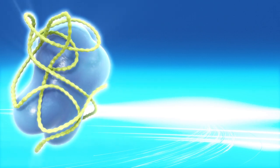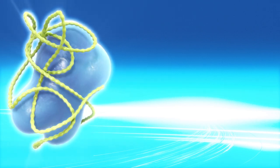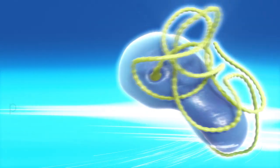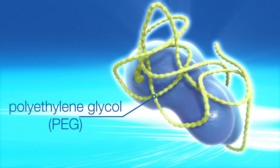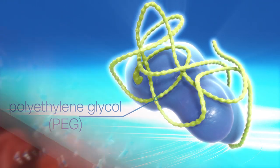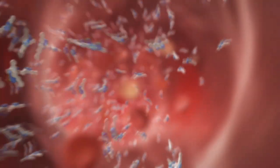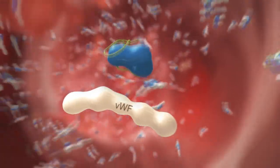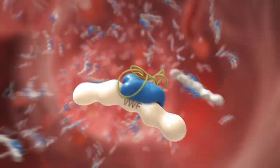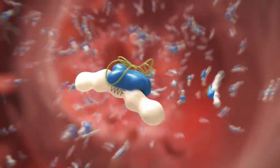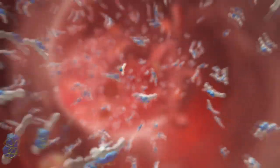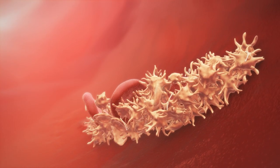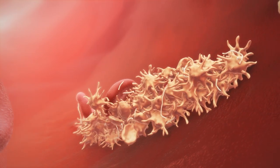The molecule is a B domain deleted recombinant factor 8. Its special feature is a purposely chosen polyethylene glycol polymer, or PEG for short, which is intended to prolong the circulatory half-life of the recombinant factor 8. In this way, reliable clotting could be restored.